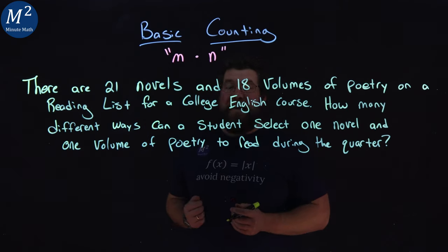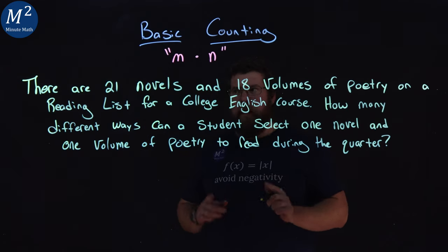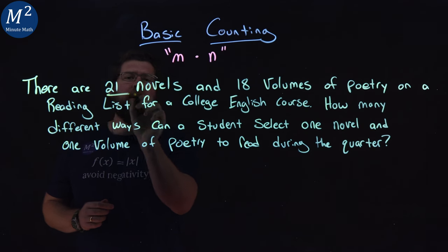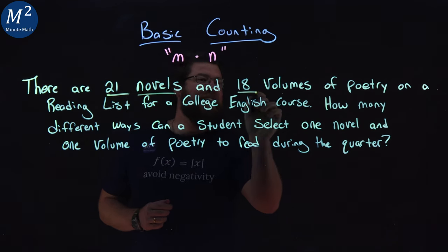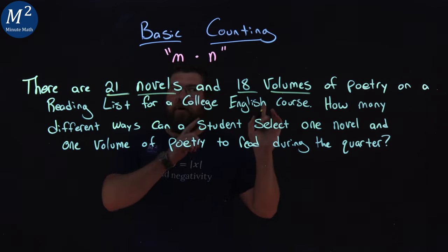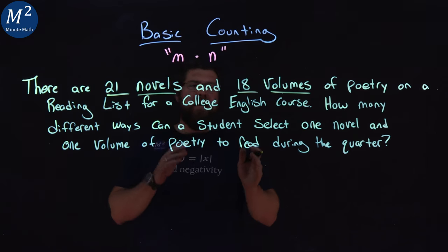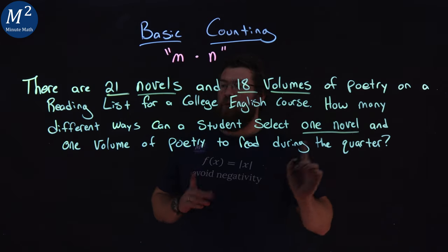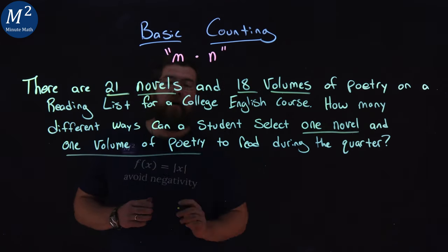Let's learn some basic counting rules. They tell us here that there are 21 novels and 18 volumes of poetry. We need to select one novel and one volume of poetry.